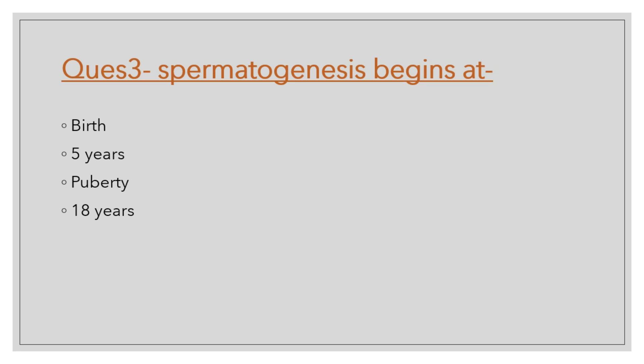Question number 3: Spermatogenesis begins at birth, 5 years, puberty, or 18 years? As we all know, spermatogenesis in men begins at the age of puberty, whereas in women it begins in the intrauterine phase.